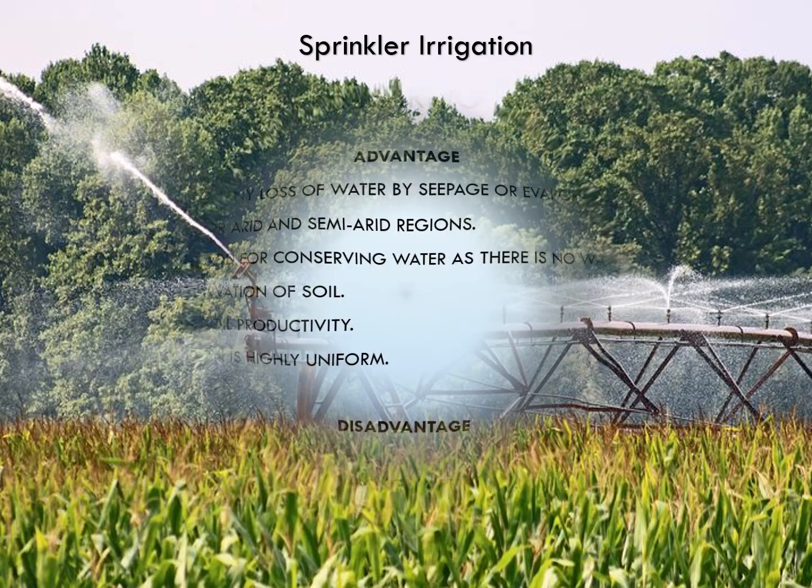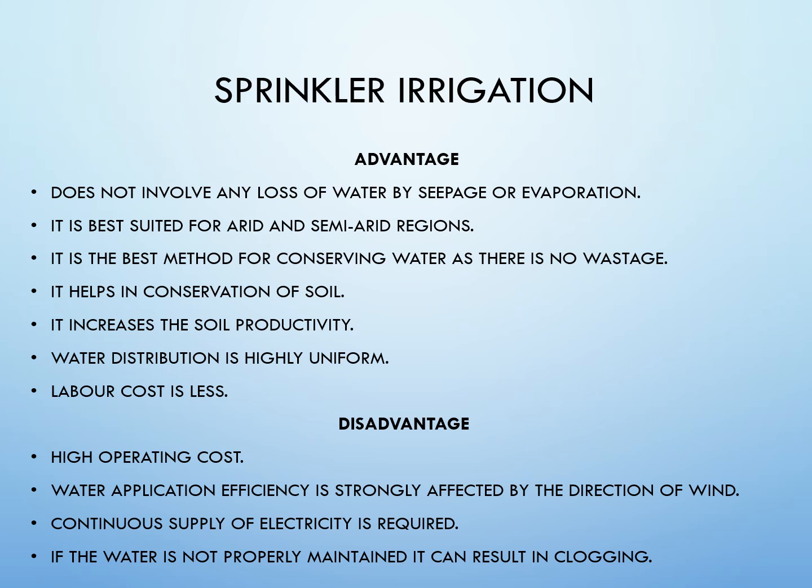Let's look at the advantages and disadvantages of sprinkler irrigation. For advantages: it doesn't involve any loss of water by seepage or evaporation. It is best suited for arid and semi-arid regions, and also sandy and uneven land. It is the best method for conserving water as there is no wastage. It helps in conservation of soil, increases soil productivity, and water distribution is highly uniform.